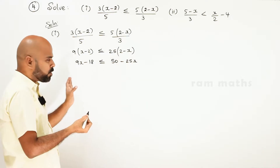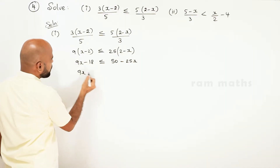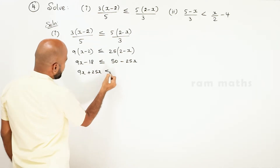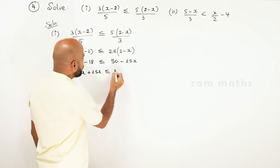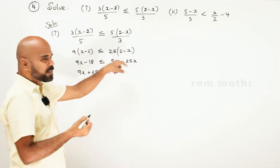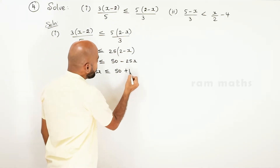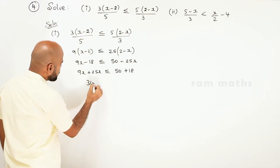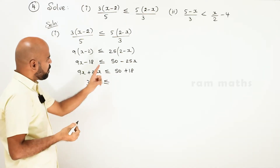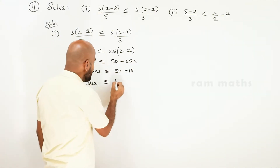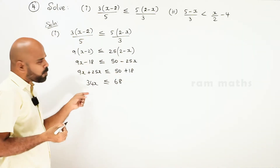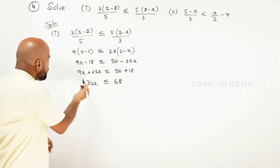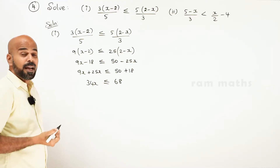25 into minus x is minus 25x. Now x is the constant. This is already 9x; minus 25x becomes plus 25x. Less than or equal to 50. Minus 18 becomes plus 18. 9x plus 25x is 34x, less than or equal to 50 plus 18 is 68. x is positive, so the answer is 3. Divided by 34.